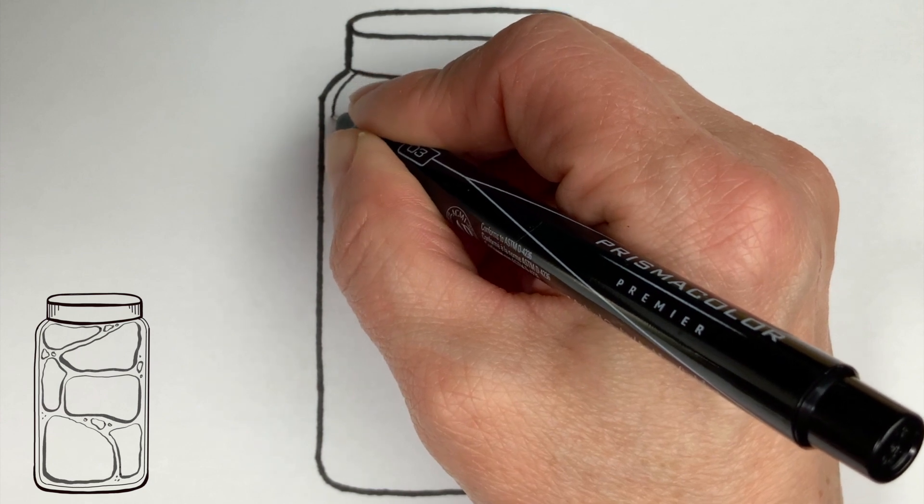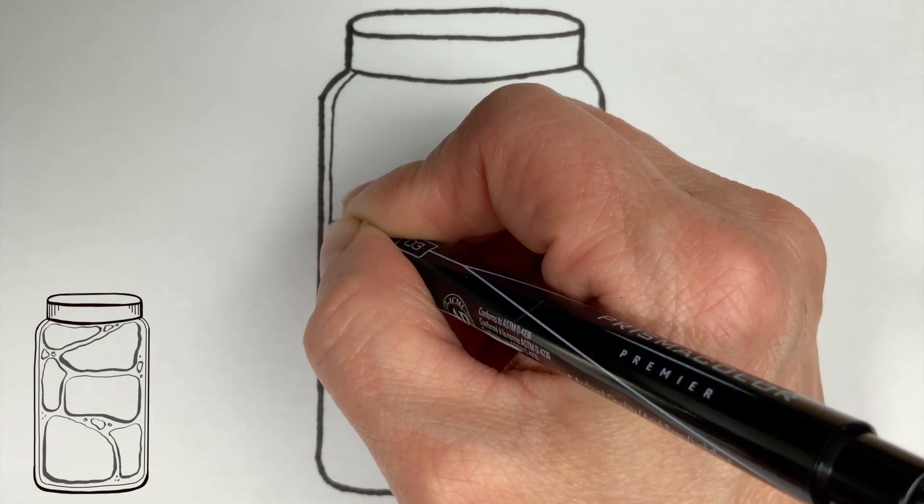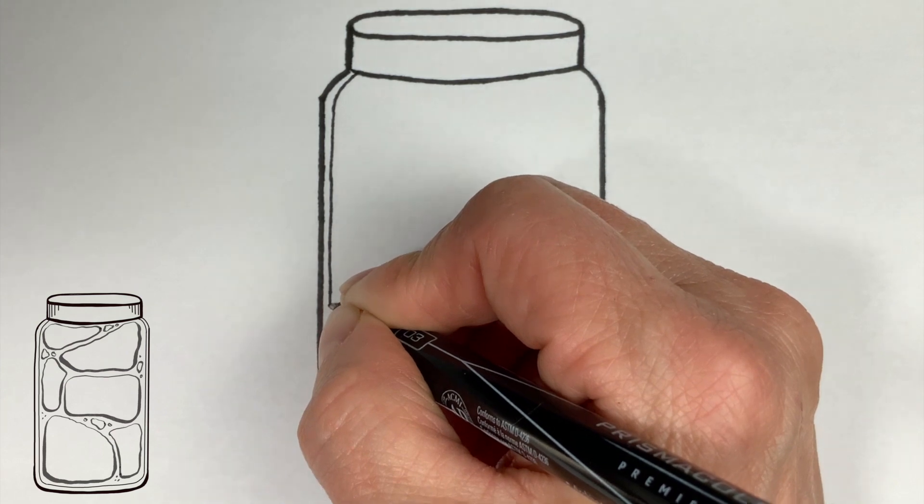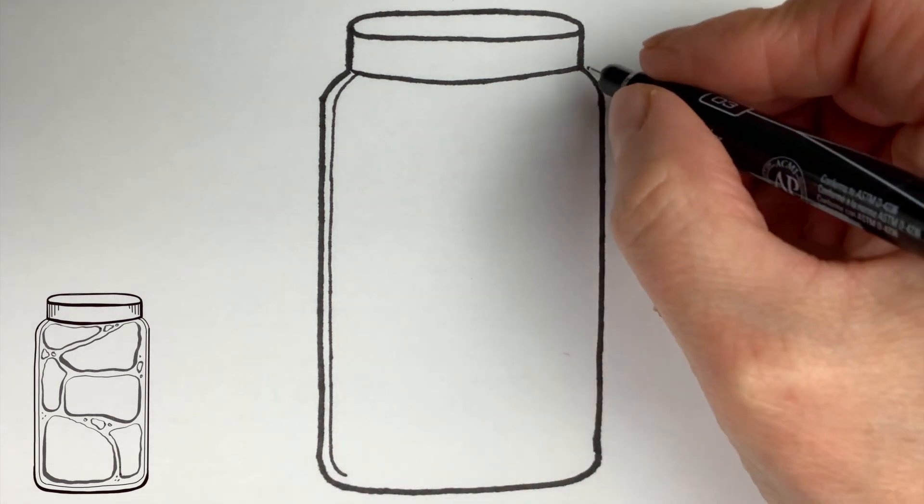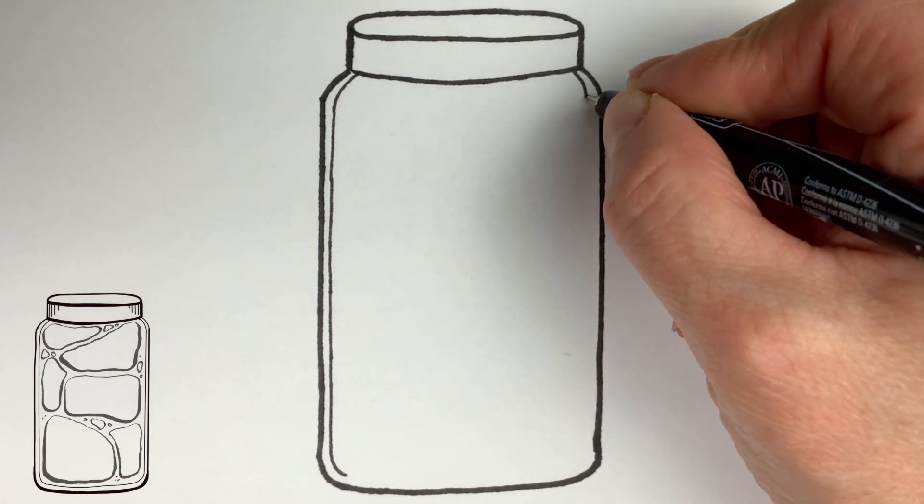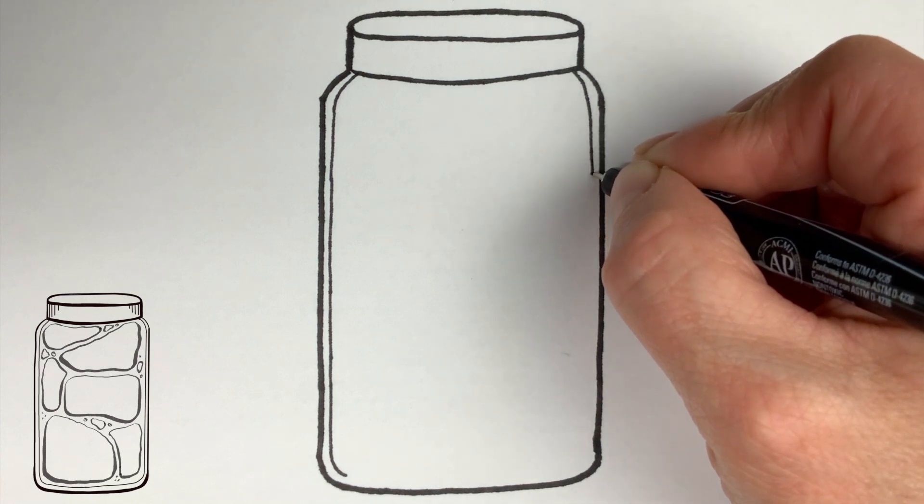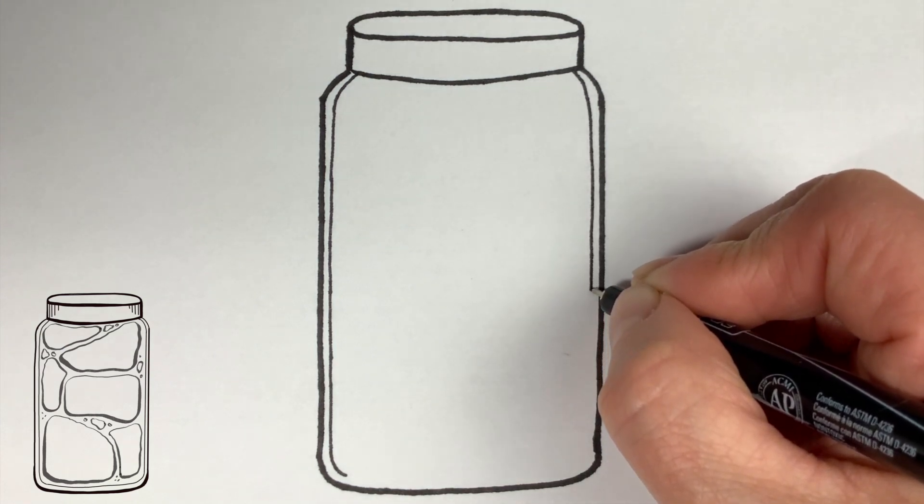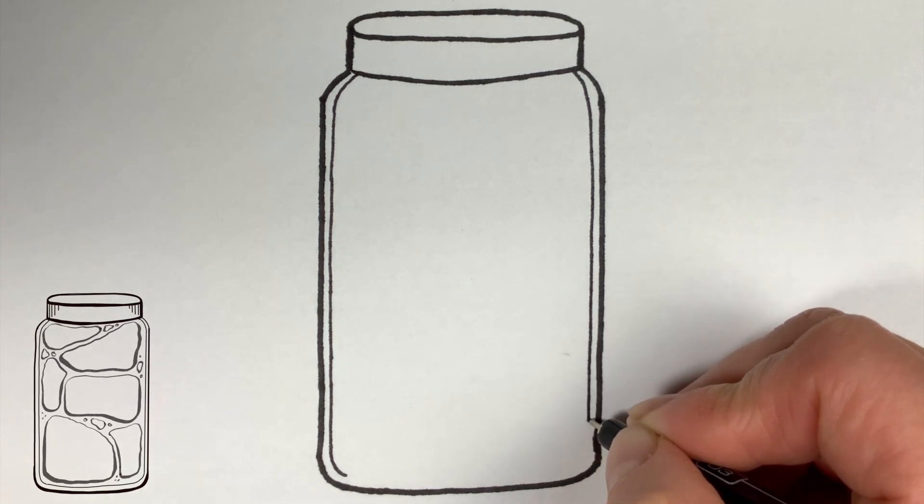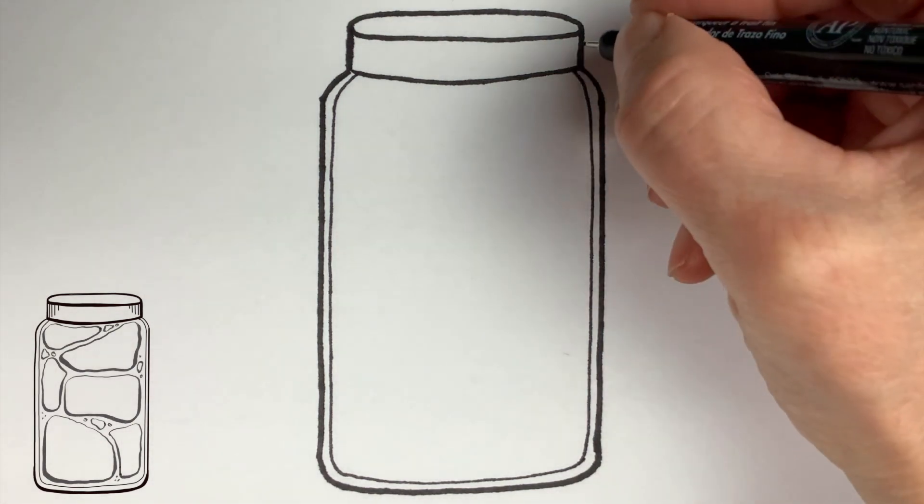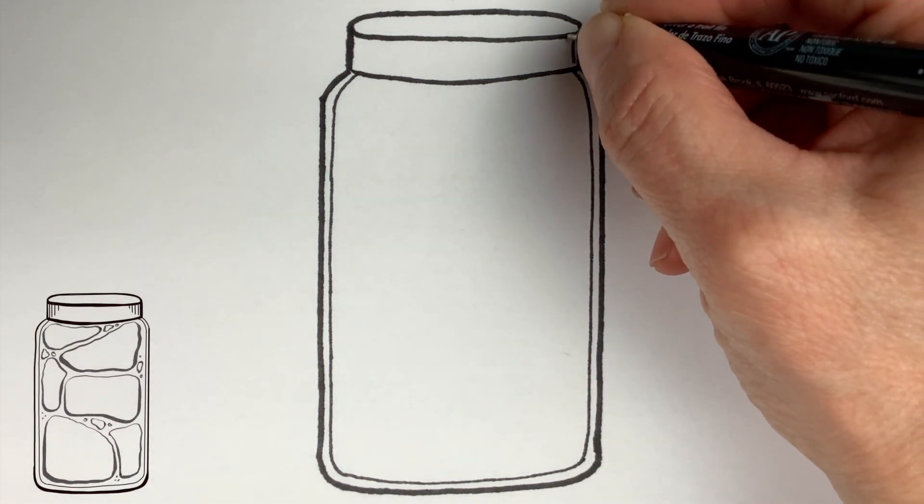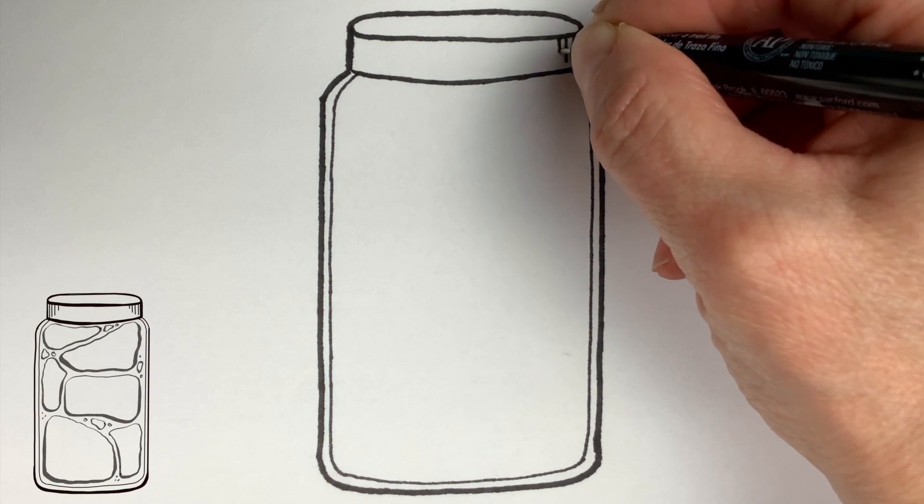I switched to a thinner pen to just show the glass of the jar so I'm giving it a thickness just in case you decide to use another medium to paint it in. This is like the width of the glass of the jar. And I just do a few little vertical lines on the outside edges of the cap.